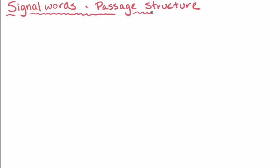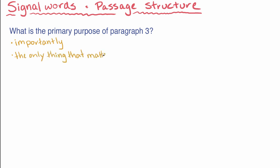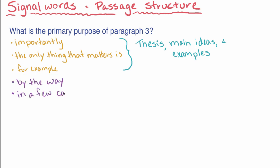For other foundation questions, you'll need to pay attention to the author's use of signal words and to consider the passage structure. One example that you might use signal words or text structure to answer is, what is the primary purpose of paragraph 3? The author can include many kinds of signal words that you could use to help answer this question. These can include words and phrases like importantly, the only thing that matters is, or for example. This can help you identify basic information like thesis statements, main ideas, and examples. Phrases like by the way, or in a few cases, can help signal a minor point, departure, or digression from the main theme.